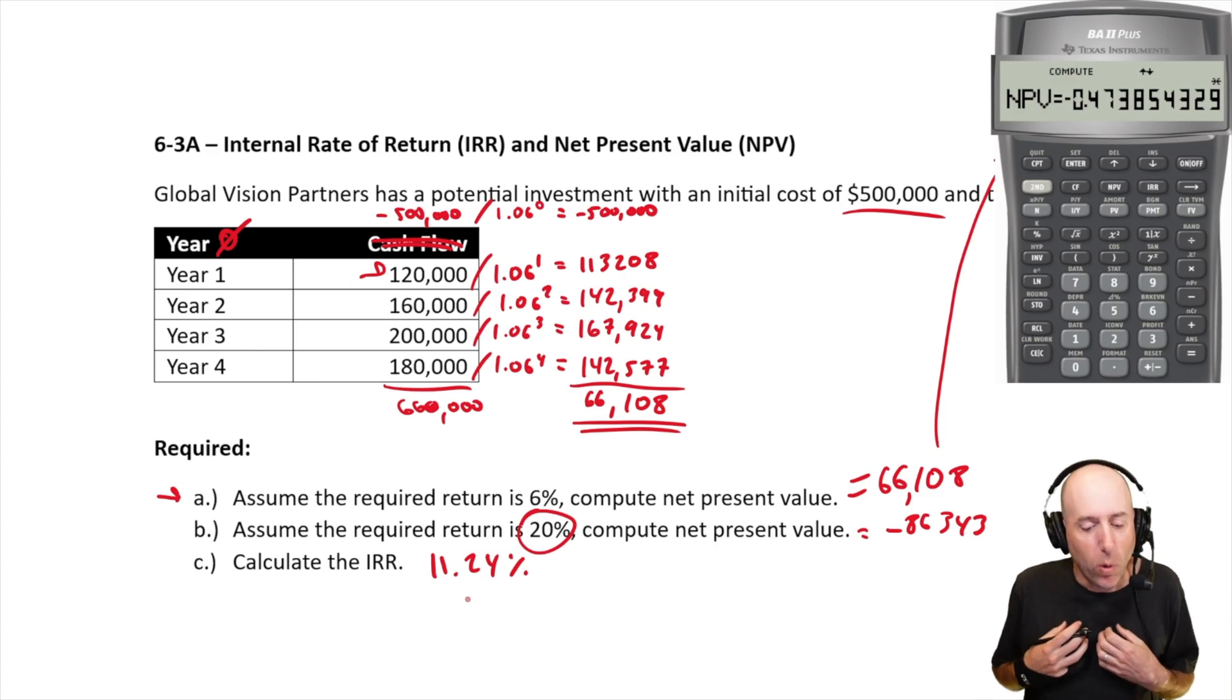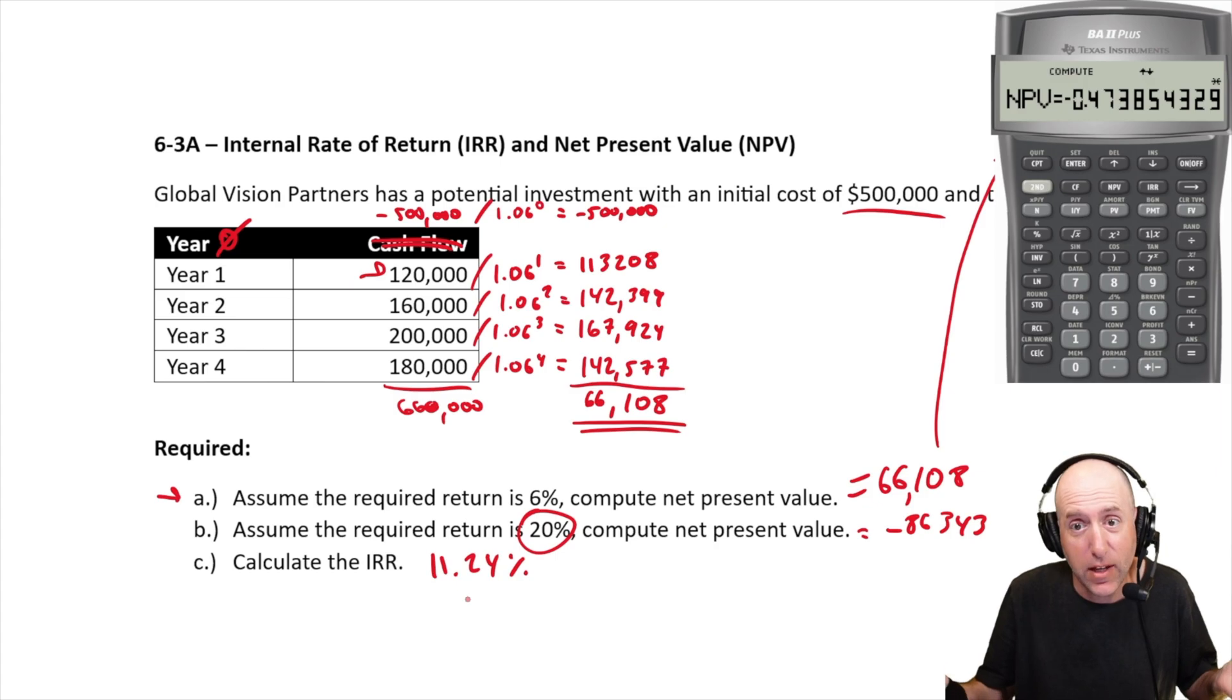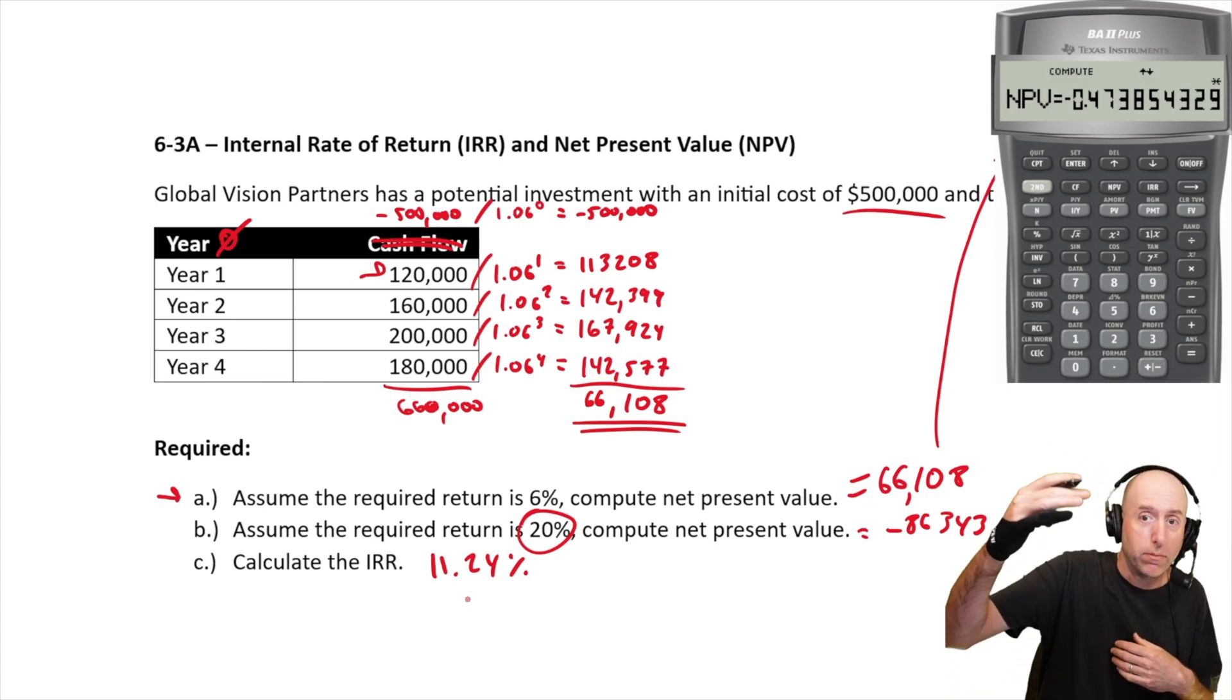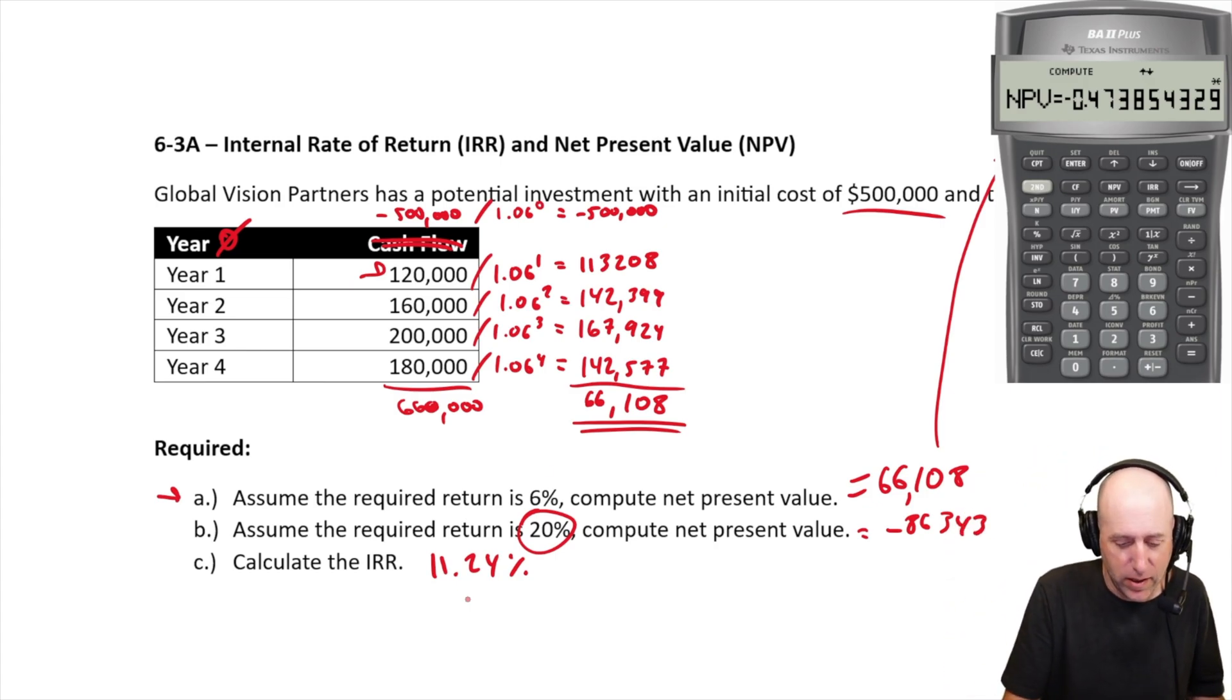So, that's the internal rate of return of the project. And what does that mean? Well, it means if my required return is less than 11, this is going to have a positive NPV. If my required return is more than 11, it's going to have a negative NPV. And that's certainly bared out in parts A and B.